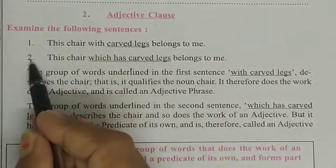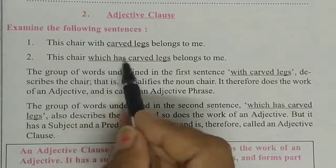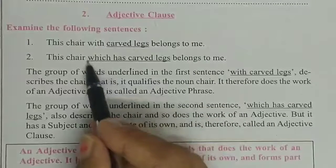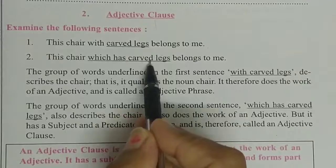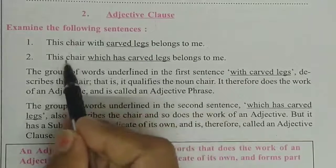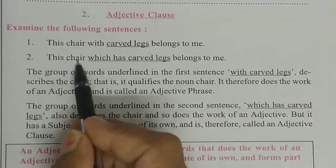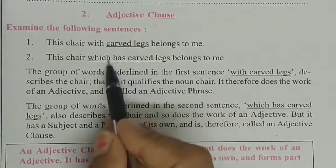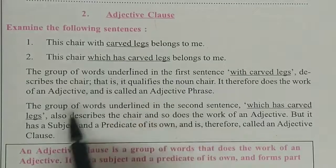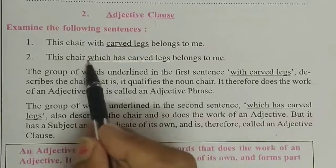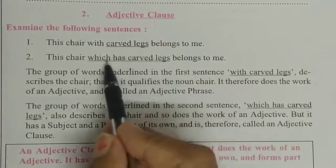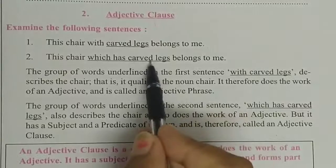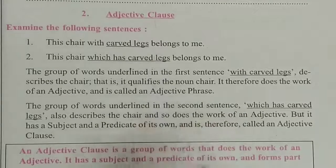Now, you see in this second sentence: 'This chair which has carved legs belongs to me.' This underlined group of words also describes the noun chair and also acts as an adjective. But in this sentence, this underlined group of words has its own subject and its predicate. So, this is called adjective clause.